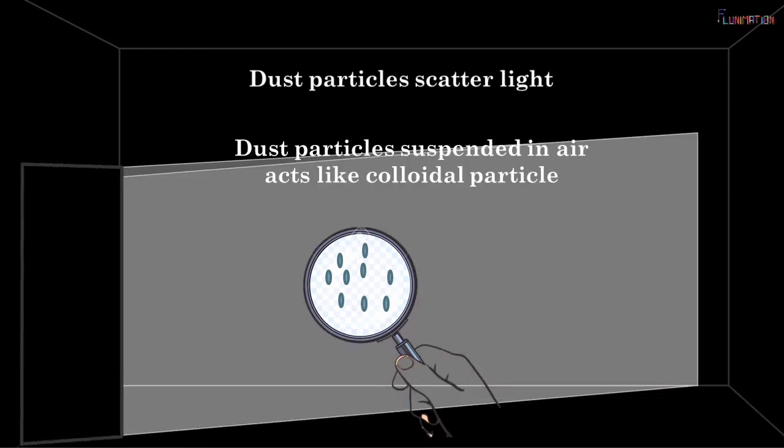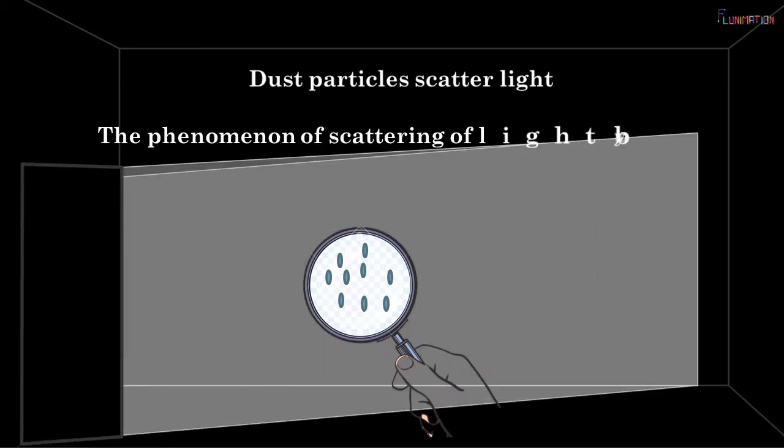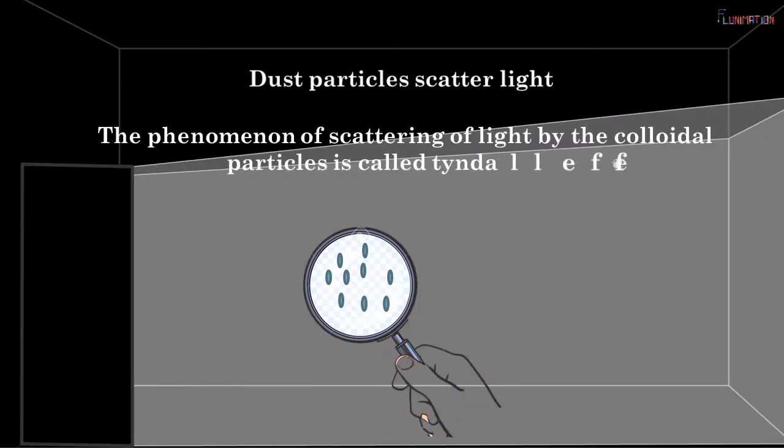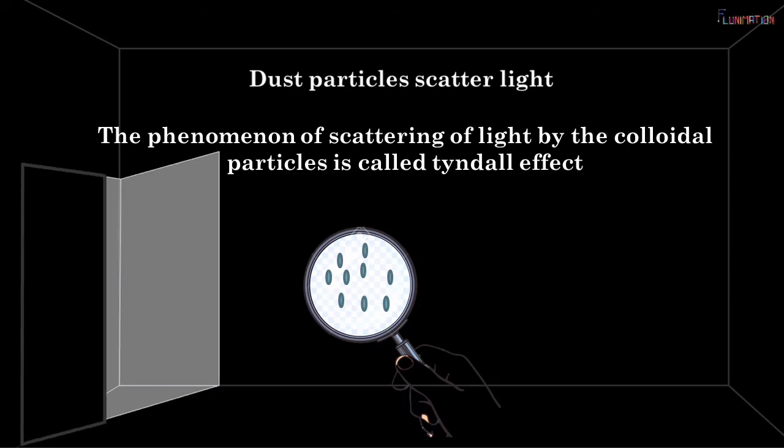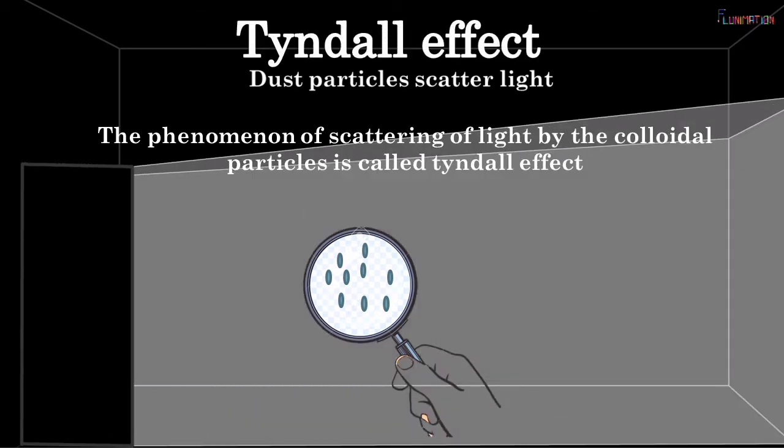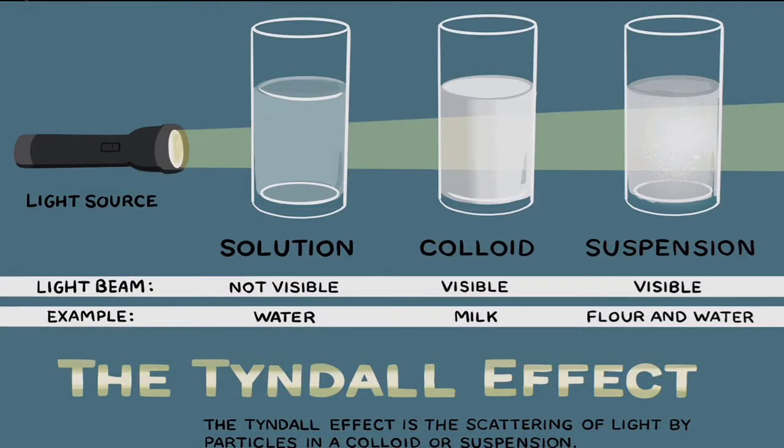The phenomenon where light is scattered by colloidal particles is called Tyndall effect. A similar observation is seen when light beam from the headlight of an automobile comes through the fog and mist. The fog particles become visible due to Tyndall effect.